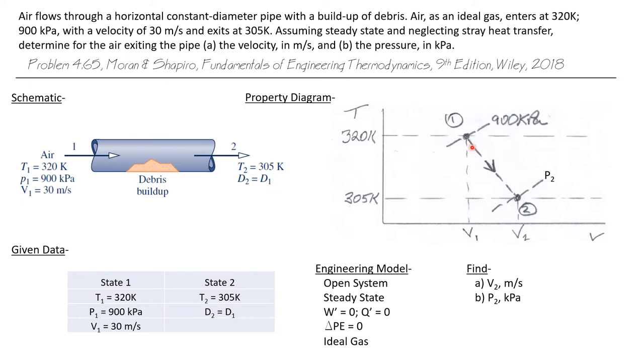State two has a lower temperature. And because I expect a pressure drop across this debris field, I'm going to expect that P2 is less than P1. And therefore the air is going to expand to a lower pressure and a lower temperature. So I'm showing that V2 is greater than V1.